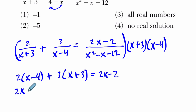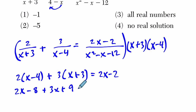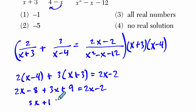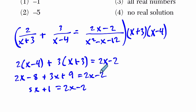Now we distribute: 2 times x gives 2x, minus 2 times 4, plus 3 times x plus 3 times 3 which is 9, equals 2x minus 2. So over here we have 5x plus 1 equals 2x minus 2 — since 3x plus 2x is 5x and 9 minus 8 is 1. Subtracting 2x from both sides gives 3x, then subtracting 1 from both sides gives negative 3. So x equals negative 1.